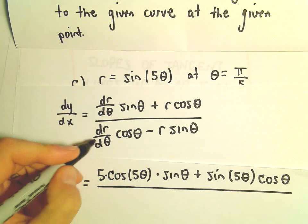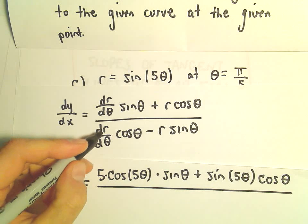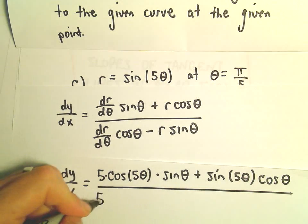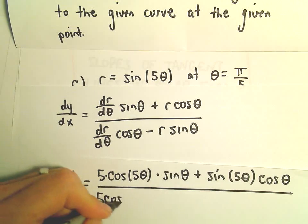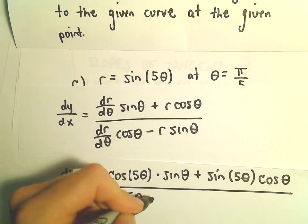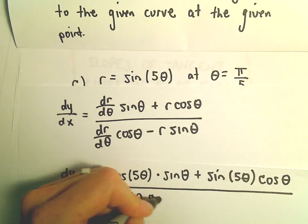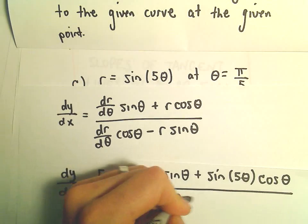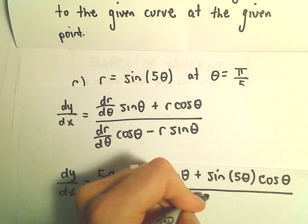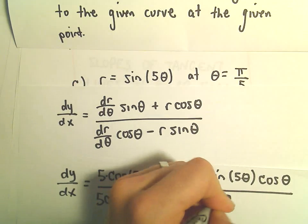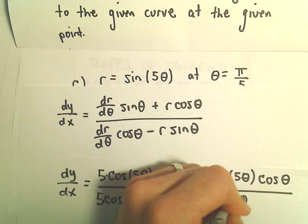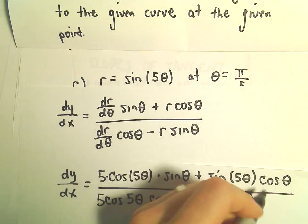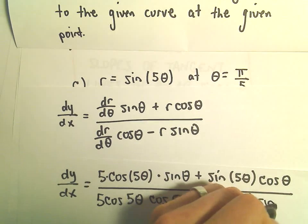In the denominator, the derivative of r with respect to θ — that's going to be 5 cosine of 5θ times cosine of θ, minus r, which is sine of 5θ, multiplied by sine of θ.